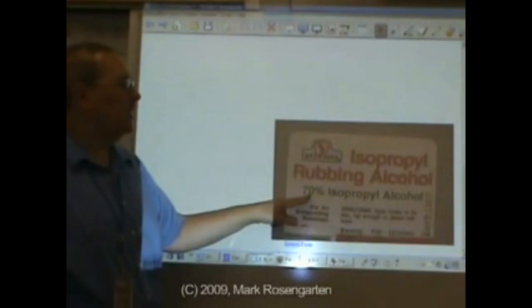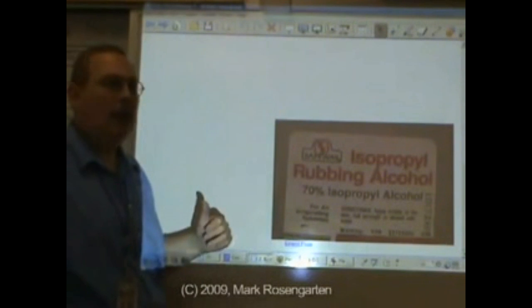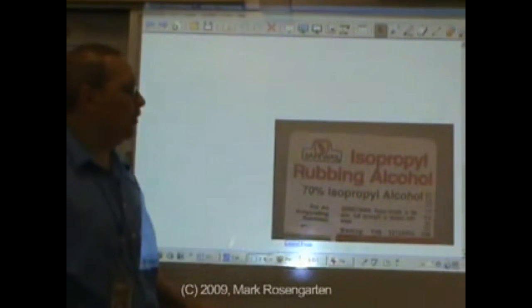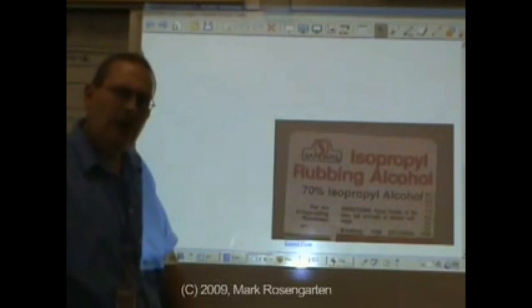In a 70% isopropyl alcohol solution, also known as rubbing alcohol, that means 70% of the volume is isopropyl alcohol, and the other 30% is distilled water.